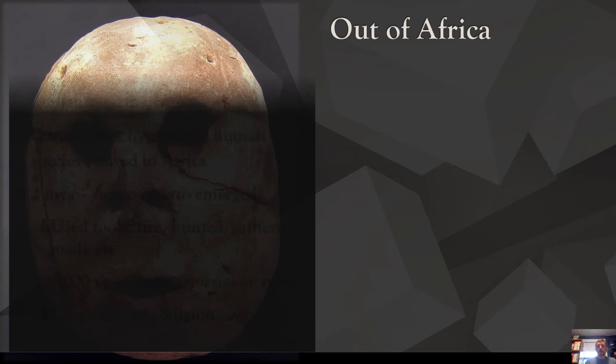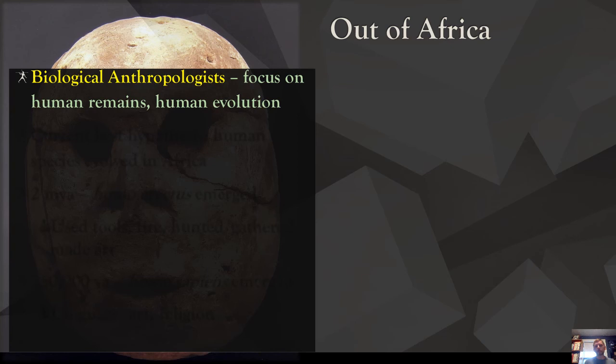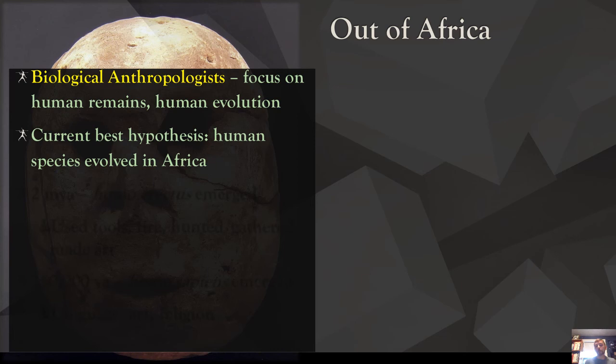I'm going to start first with some key ideas that we need to take into consideration about the evolution of human beings. In anthropology, this is the work of biological anthropologists. They are focused on human remains and what we can learn from bones and skeletons and teeth. They're focused on human evolution — you can take entire classes on biological anthropology and look at the evolutionary record for the development of human beings. Our current best hypothesis is that human beings evolved in Africa and then spread outwards from Africa.